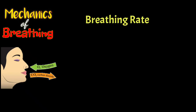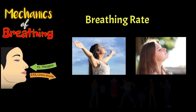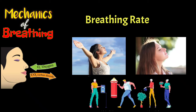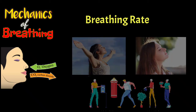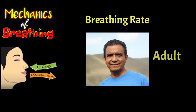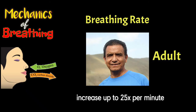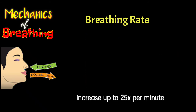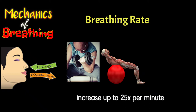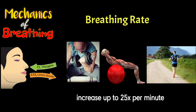Breathing rate varies from person to person and depends on the different kinds of activity they perform in daily living. On average, the breathing rate of an adult is 15 to 18 times a minute. However, it may increase up to 25 times per minute in cases of heavy exercise such as running or fast walking.